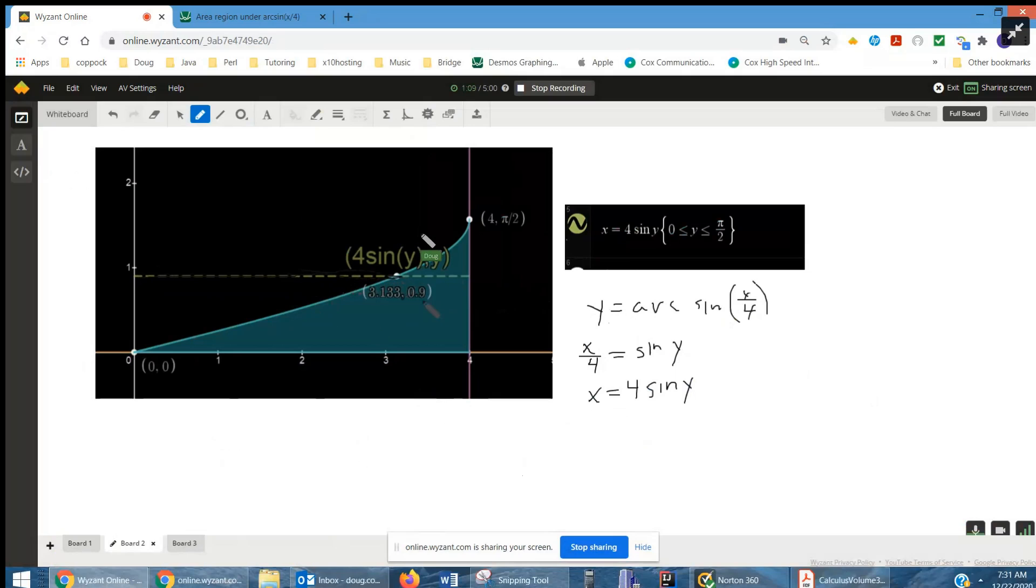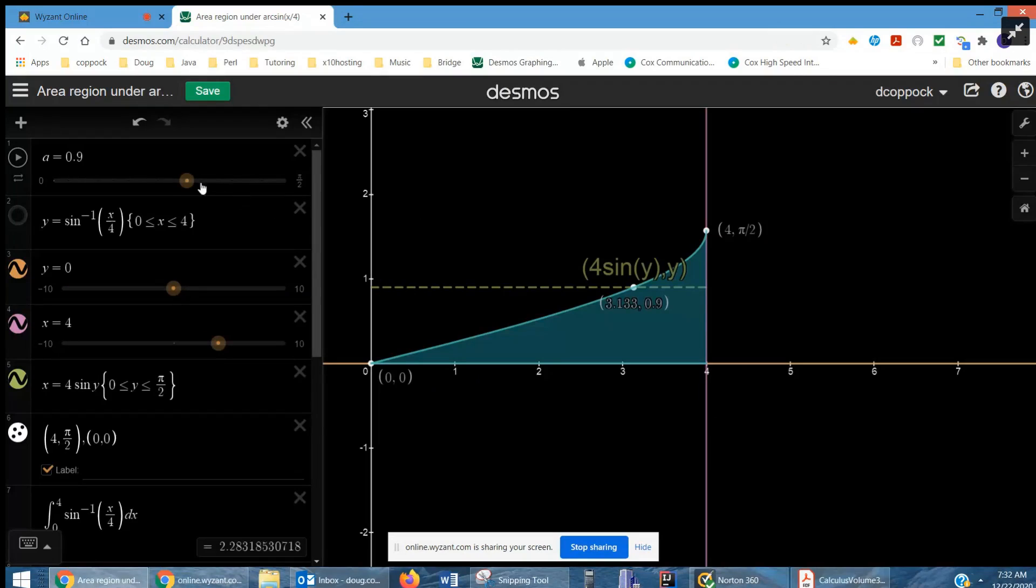And what we want is this length right here. Let me go to red. And that will be the length of a rectangle. Let me show you what I mean by a typical rectangle. Focus on that horizontal dashed green line there.